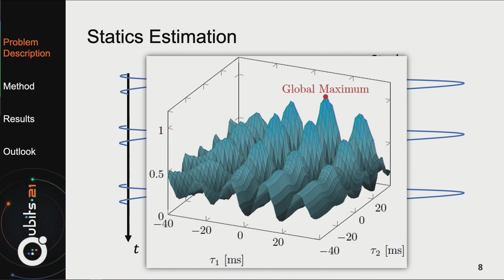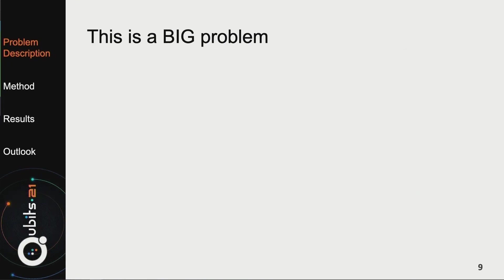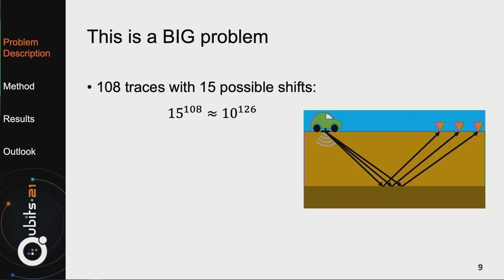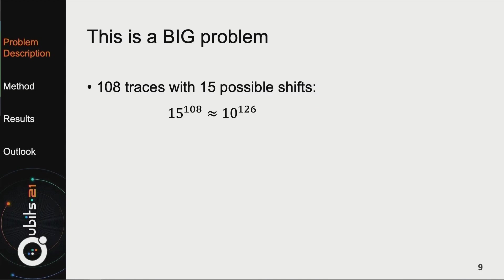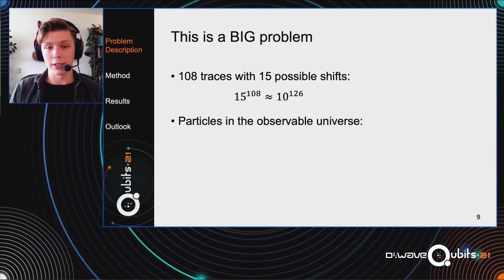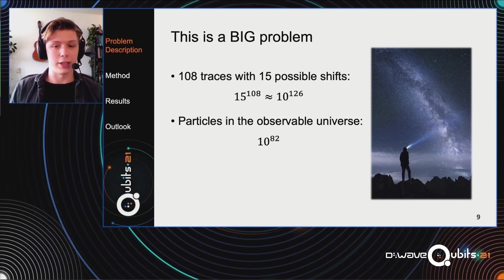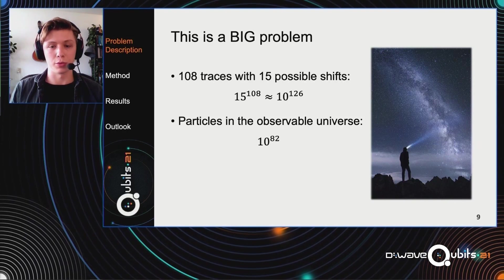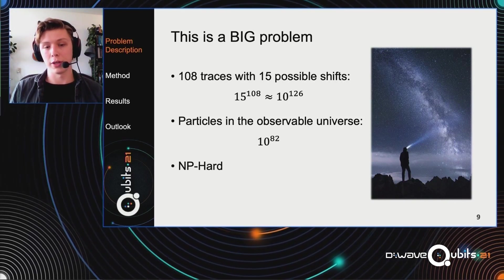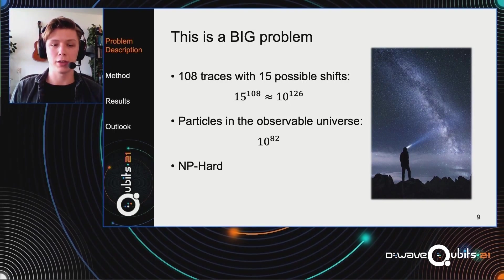It might seem like an easy problem, but it's actually a very difficult problem. It's a highly multimodal problem which is very difficult to solve. And this is just for two traces. You can imagine that when you use hundreds of traces, it gets even more difficult. Not only is it a difficult problem, it's also a very big problem. One of the solutions I'm going to show you, we have 108 traces with 15 possible shifts, and that will amount to roughly 10 to the power 126 different combinations. Just to give you an idea of how large that number is, the number of particles in the observable universe is estimated to be roughly 10 to the power 82. And it's getting even worse because when you make a combinatorial problem of this, it's actually an NP-hard problem. So it's a very big, very difficult problem.